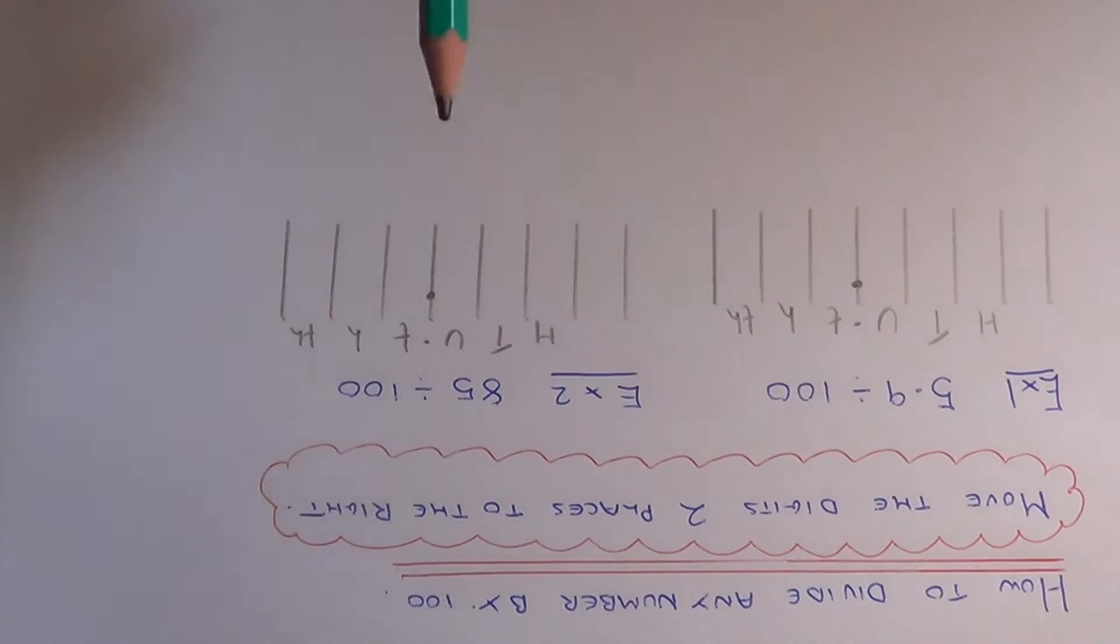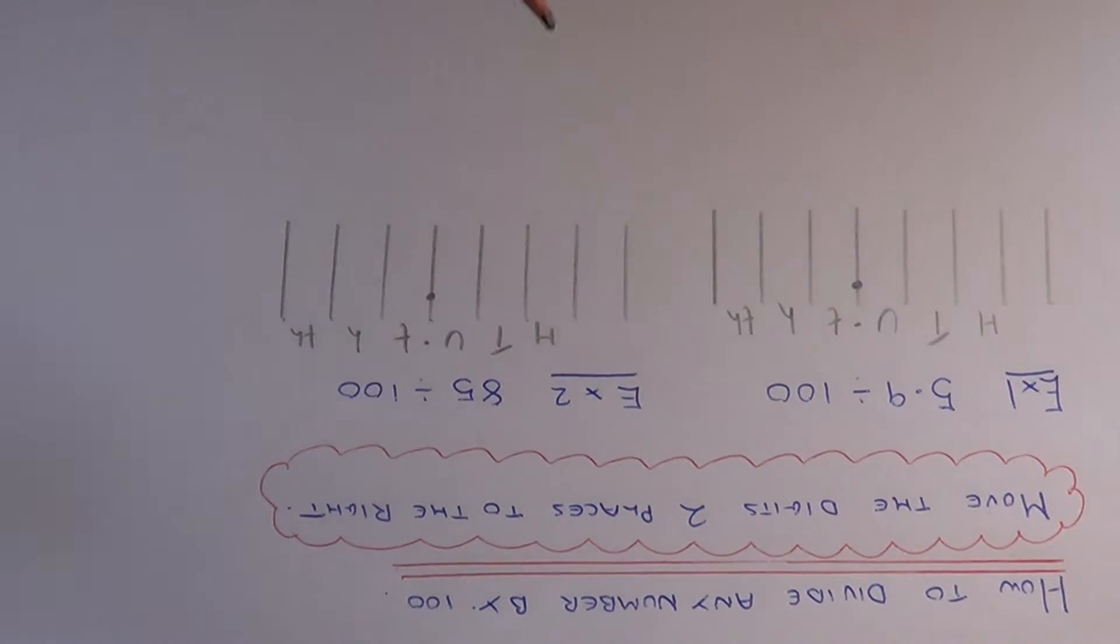The thing you need to remember is, if you're dividing by 100, you move the digits two places to the right on your columns.